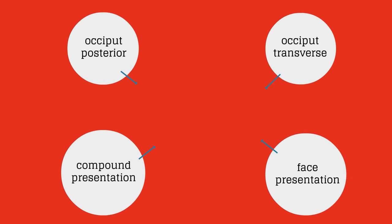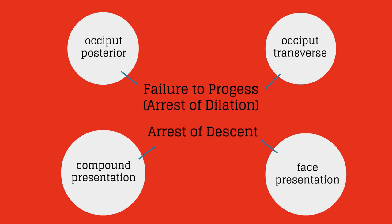Labor can be stalled before she reaches 10 cm dilated known as failure to progress or arrest of dilation or the patient can reach 10 cm and the fetus does not descend for delivery known as arrest of descent.